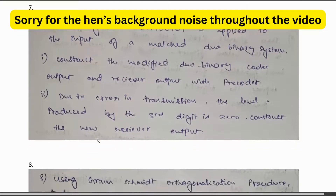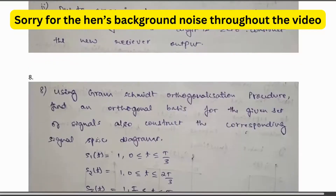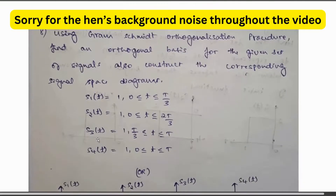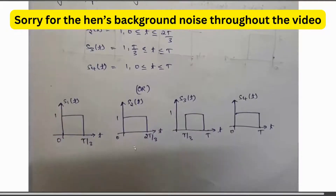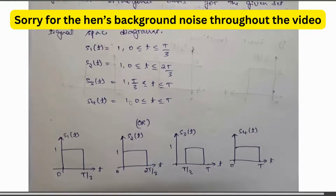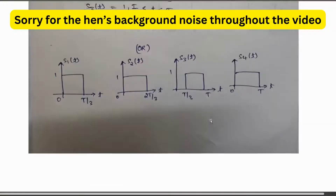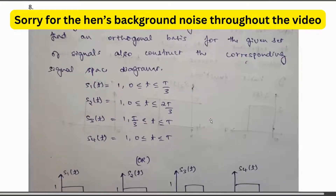You can take a screenshot of it. Next, using the Gram-Schmidt orthogonalization procedure, we have to find the orthogonal basis for a given set of signals. The signals can be given in equation form or in graphical representation form — both approaches are the same. This type of Gram-Schmidt orthogonalization problem is very important.